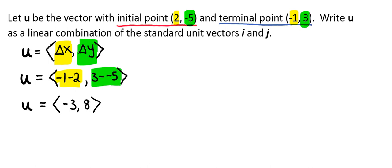And so we can write this as a linear combination by putting our change of x in front of our i and our change of y in front of our j. So we can say that u equals -3i plus 8j.